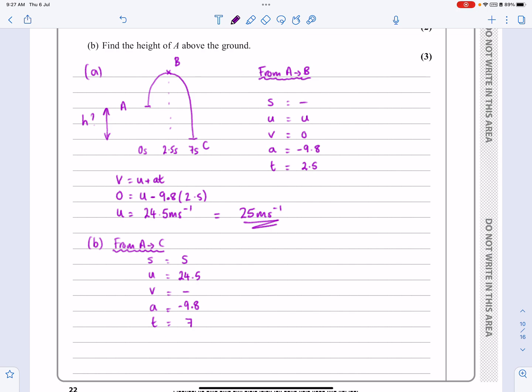S, U, A, and T. Well, if you've done any work on the kinematics, that should just jump out at you as being S equals UT plus half AT squared.